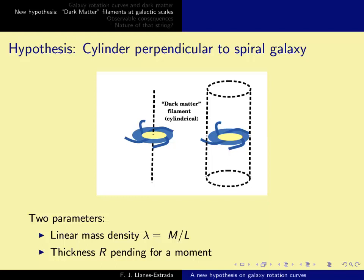Now this cylinder has two parameters. One is the linear mass density lambda, which is the mass per unit length, and the other is its thickness. And let's leave this aside for a moment, because it might be infinitely thin or it might have a finite thickness, and the galactic rotation curves outside the cylinder wouldn't know the difference. This is again a consequence of Gauss's law.